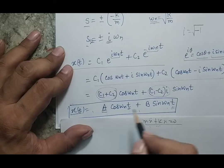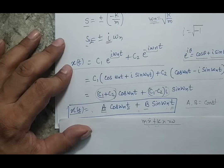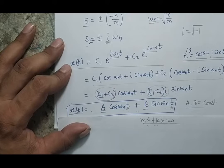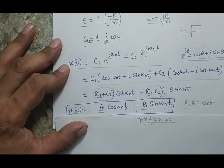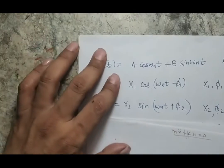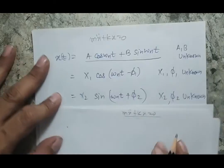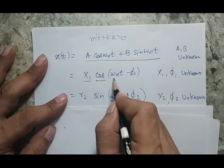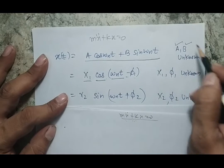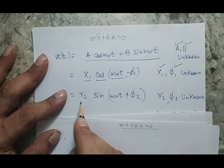In this solution, A and B are constants that can be calculated by applying initial conditions, since this is an initial value problem. The constants can be obtained by putting the initial values. This same solution can be written in alternative forms: x = X₁ cos(ωₙt - φ), where instead of A and B, the unknowns are X₁ and φ. Similarly, a third form uses X₂ and φ₂.